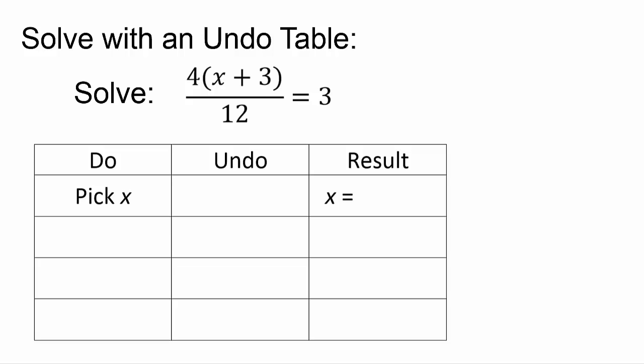And we've solved with an undo table. We'll start by pretending to plug in a number for x and imagine what we would do to that number. If we plugged in a number for x, the first thing we would do is add 3. Then we would multiply by 4. And finally we would divide by 12. To undo the divide by 12, we multiply by 12. To undo plus 3, we subtract 3. We're looking for a number for x so that when we add 3, multiply by 4, and then divide by 12, we end up getting 3. So we want the result to be 3.